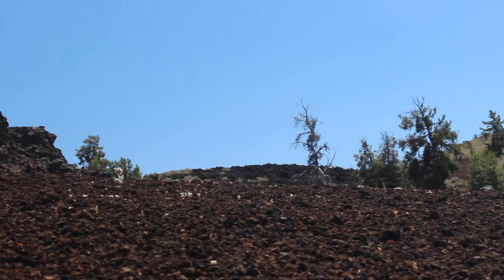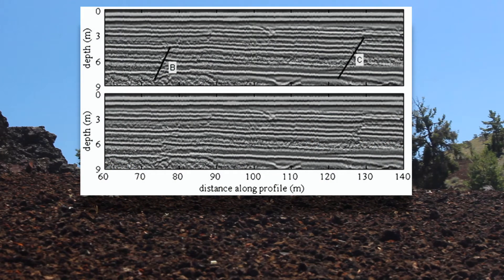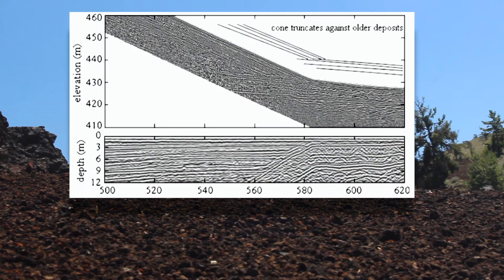Some of the data collected on this volcano showed evidence of small fault offsets. The top figure is an annotated version of the bottom figure. You can see that the horizontal reflection patterns are discontinuous, which is interpreted as fault offset. Here is another example of a result showing how the cone deposits truncate against the older, horizontally layered deposits at the base of the slope. This example highlights the importance of correcting for topography in GPR data — without the topographic correction, the reflector geometry is substantially skewed.